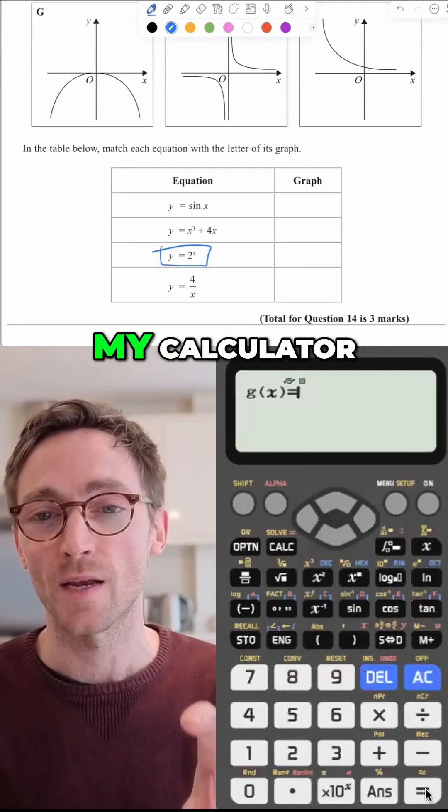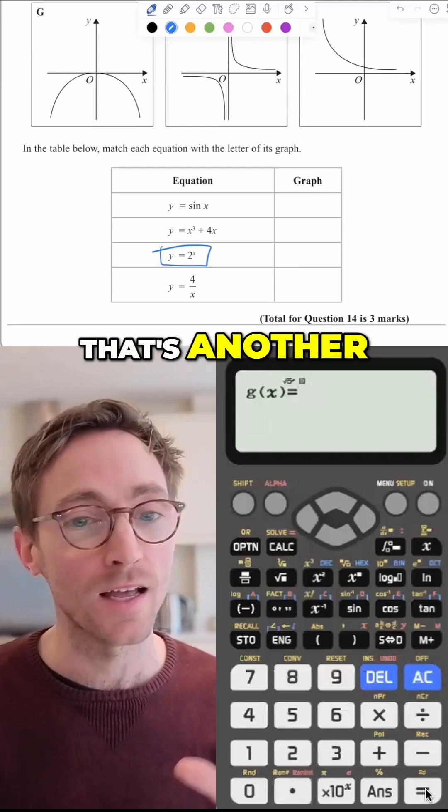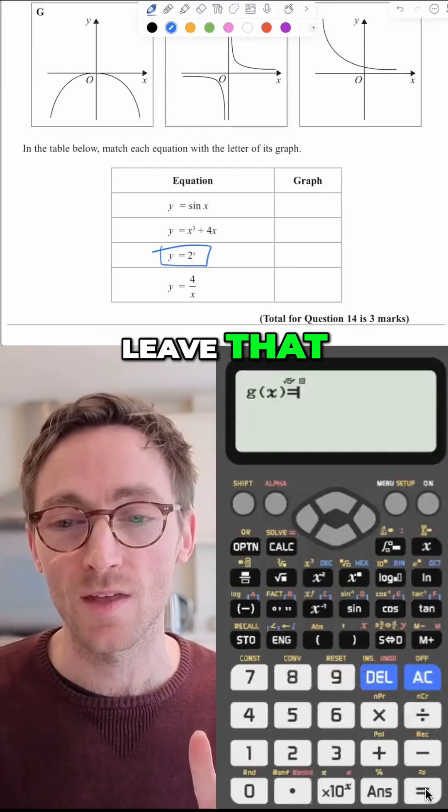So I'm putting the function into my calculator. G of x, we leave blank. That's another function. We don't need another function. We always leave that blank and we press equals.